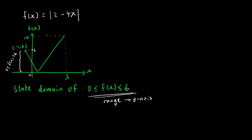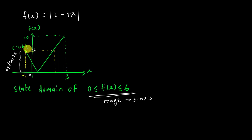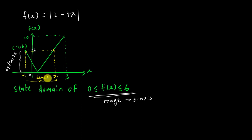If you look at the graph, the region from y = 0 to y = 6 corresponds to a segment of the graph starting from x = −1 and going across to some intersection point whose x-value I'll call 'x'. My objective is to find that intersection point to determine the domain.